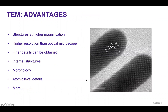TEM has numerous advantages. One of them is that we can observe structures at very high magnification, which means we can reach higher resolution than an optical microscope. We can magnify an object about 4,000 times more than an optical microscope and also 4 million times more than a simple naked eye. We can observe finer details and look into internal structures, and we can gain more insight about morphology and atomic level resolution, as shown here in a high resolution image of gold nanorods where we can clearly see each individual atom.